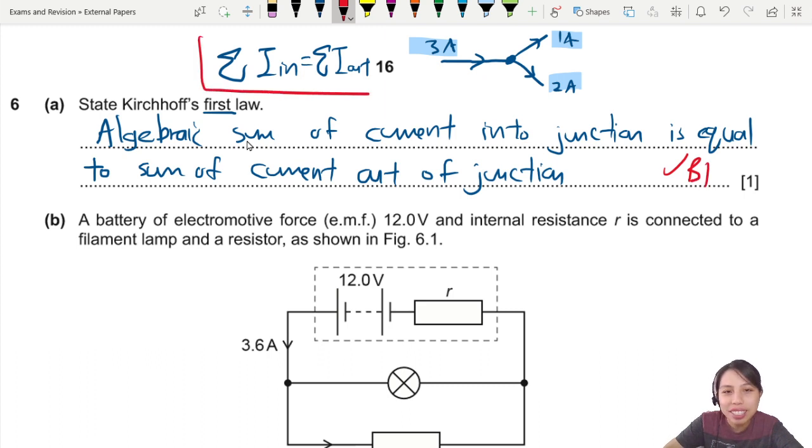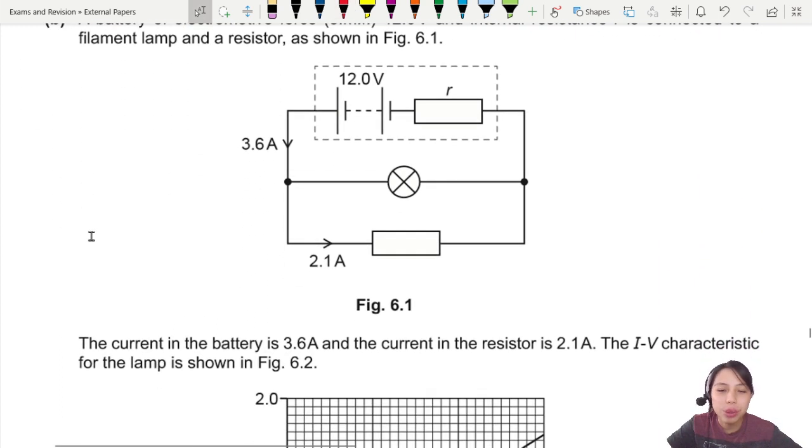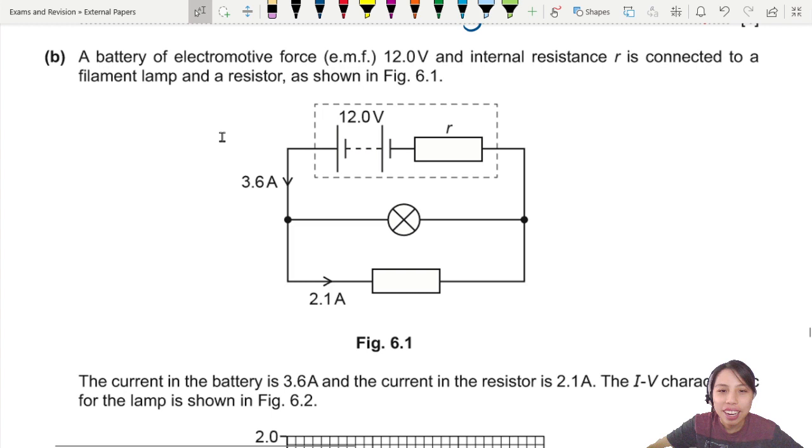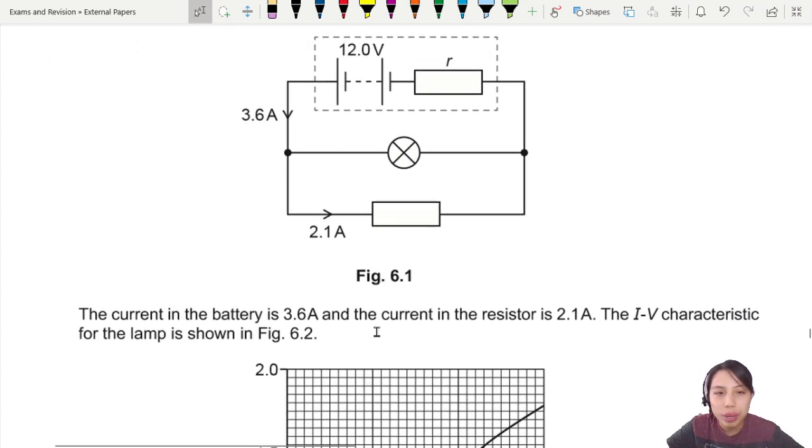It's basically this idea, but don't just write the equation, explain it in words. So let's move on to the next part. You have a circuit of 12 volt battery internal resistance, filament lamp here and resistor. Current is 3.6 given to us and 2.1 through the resistor. The IV characteristic for the lamp is shown.